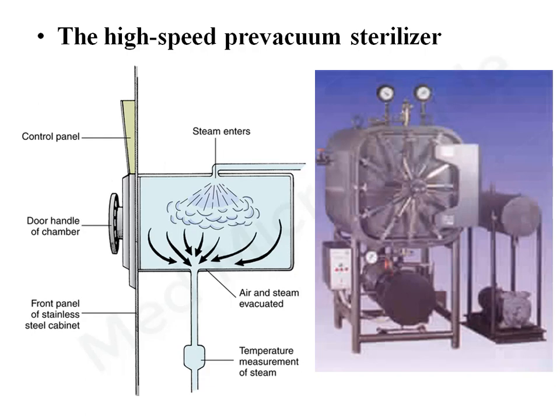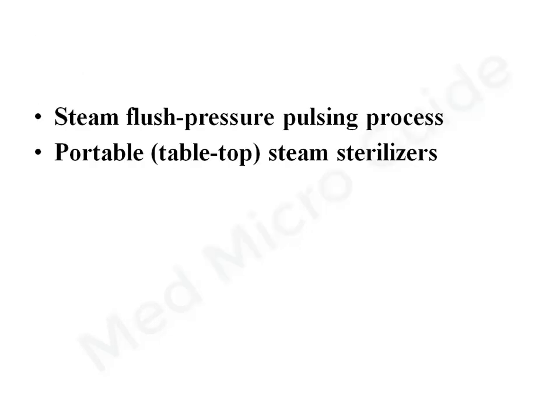The pre-vacuum sterilizer is similar to gravity displacement except it is fitted with a vacuum pump. The vacuum sucks all air from porous loads and enables instantaneous steam penetration. It typically works at 132 to 134 degrees Celsius at 30 Pascals for 3 to 4 minutes. In steam flush pressure pulsing autoclave, air is removed rapidly by repeated alternating steam flush and pressure pulses, almost as efficient as pre-vacuum sterilization. Portable or tabletop sterilizers are used for small instruments like hypodermic syringes, needles, and dental instruments in outpatient, dental, and rural clinics.